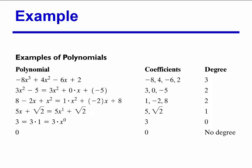Here are some examples of polynomials. The first example is negative 8x to the third plus 4x squared minus 6x plus 2. You can see that the degree of this polynomial is 3, and the coefficients are negative 8, 4, negative 6, and 2. You can see the rest of the examples as well.